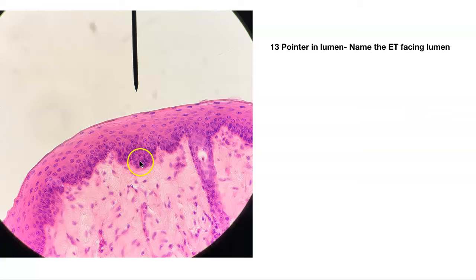Number thirteen — the basement membrane is somewhere down here, this is connective tissue. Here's your epithelial tissue. It's stratified — more than one layer thick. You look to the top: those cells have flat, flattened nuclei. This is stratified squamous non-keratinized. You have to specify keratinized or non-keratinized. Non-keratinized — these cells are still alive up here.